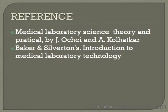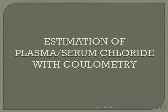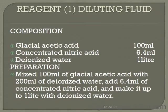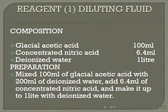Reference: we derive our work from Medical Laboratory Service Science, Theories and Practical by Jay Oches and A. Kolkata. Baker and Stelbatten introduced the Medical Laboratory estimation of plasma sodium chloride with the colorimetric method. The diluting fluid is composed of glacial acetic acid 100 ml, concentrated nitric acid 6.4 ml, and deionized water to 1 litre. Preparation: mix 100 ml of glacial acetic acid with 200 ml of deionized water, add 6.4 ml of concentrated nitric acid, and make up the solution to 1 litre with deionized water.